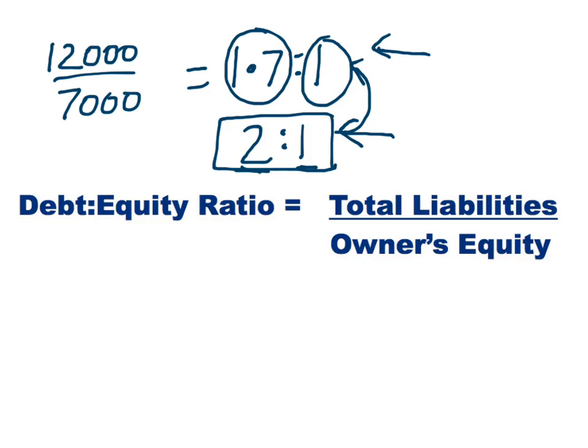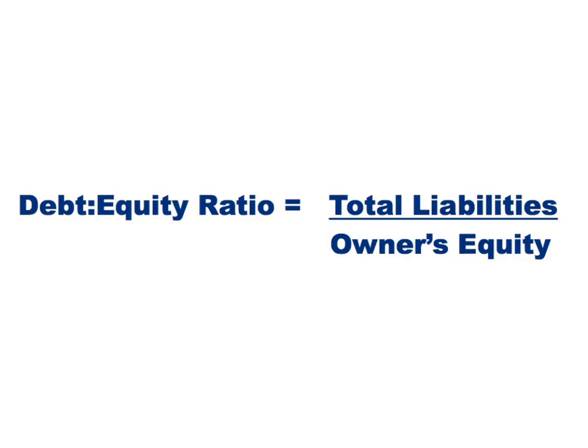There isn't necessarily one that is better or worse, but we can say that the second business has a higher reliance on debt, which leads to a greater risk of the business becoming insolvent, because there's a greater amount of money that needs to be repaid. The debt-to-equity ratio — total liabilities divided by owners' equity — shows how much the business borrows for every dollar the owner puts in. A higher number suggests higher reliance on debt to finance assets, increasing solvency risk; we call these businesses more highly geared. A lower level of gearing means less reliance on debt and less risk of insolvency.